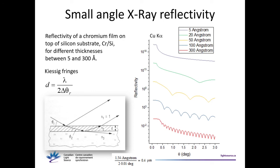This is a simulation of a chromium film on a silicon substrate with different thicknesses. The thicker the film, the more frequent the oscillations. Very thick films will have very frequent oscillations — delta-theta will be very small. So for reflectivity measurements you want very small divergence in your setup, because if you have a divergent beam you can make two-theta steps as small as you want but the oscillations will be washed out by your beam divergence.